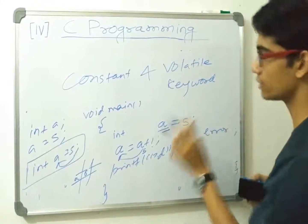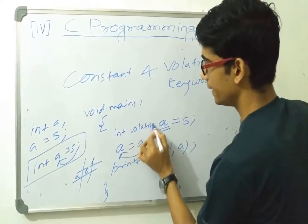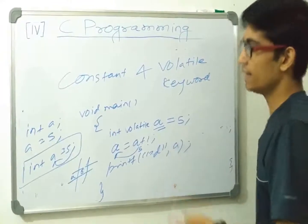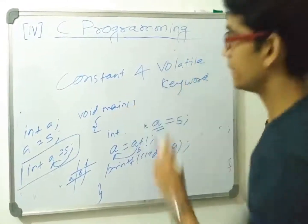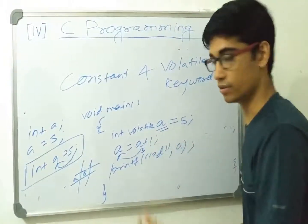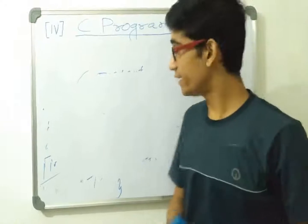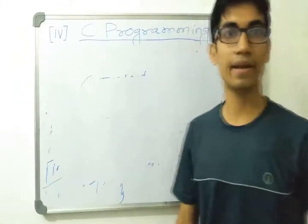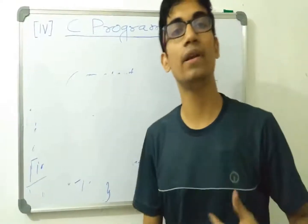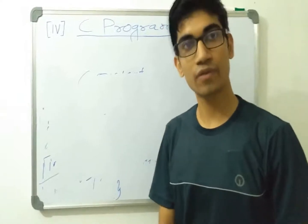If a variable is declared as volatile, it signifies that it can be changed by external programs. Even without writing volatile, we can change a variable, but writing volatile explicitly signals that an external program may also modify it. That was a basic idea of const and volatile keywords. Hope you learned about data types in C — primitive, user-defined, and derived. See you in the next video session. Thank you for watching, please like and subscribe.